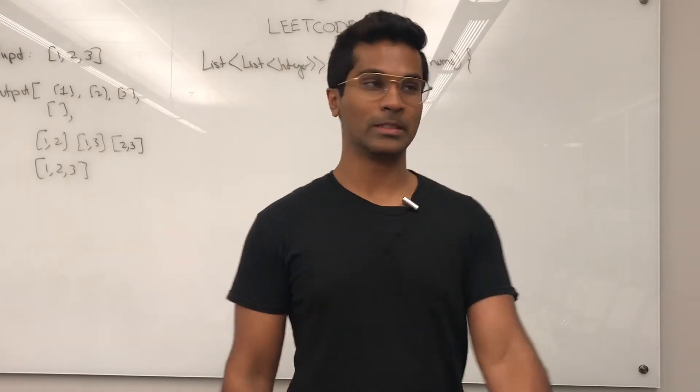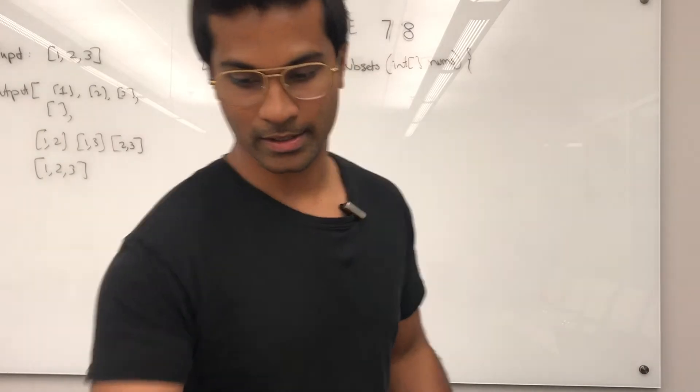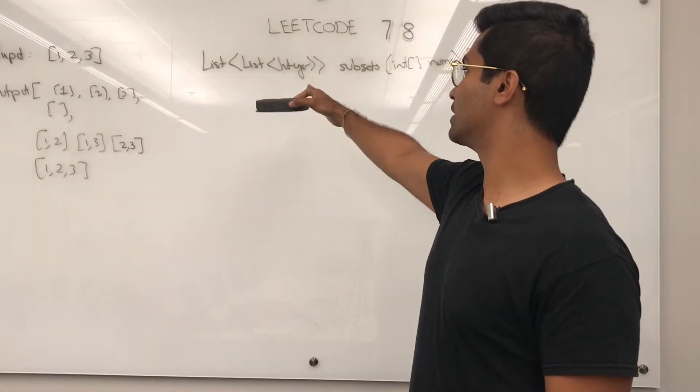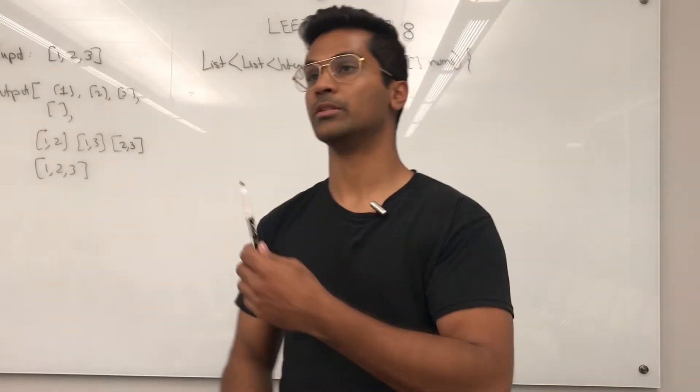What's up everyone? Today we're going to go over LeetCode number 78 subsets. The input is going to be an array of integers and the output is supposed to be a list of list of integers and in this one it's guaranteed to not be duplicates.